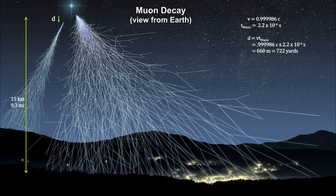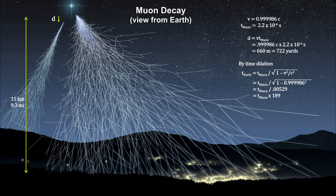This high count rate is explained using relativistic time dilation. The measured velocity of the created muons is 0.999986 times the speed of light. So, by time dilation, the half-life would be 189 times longer.